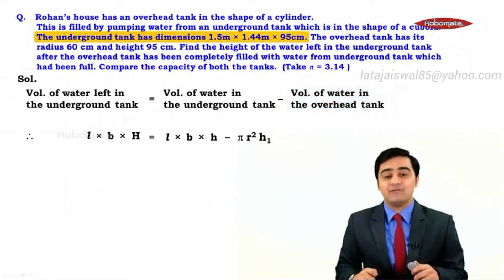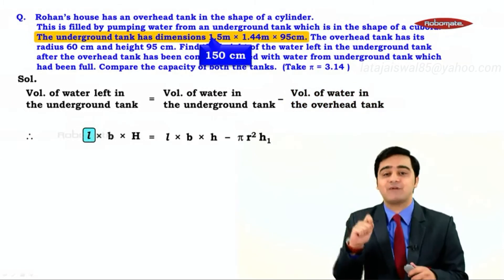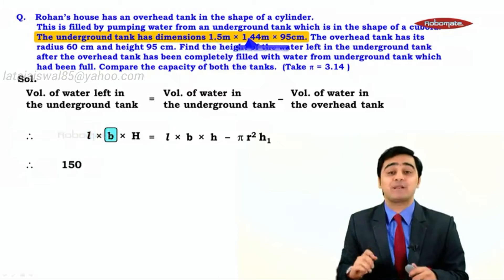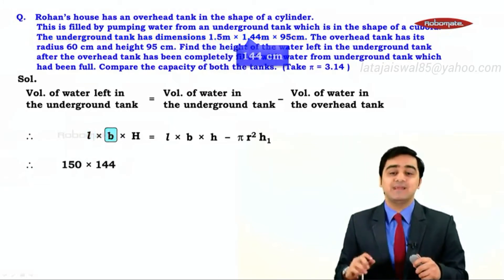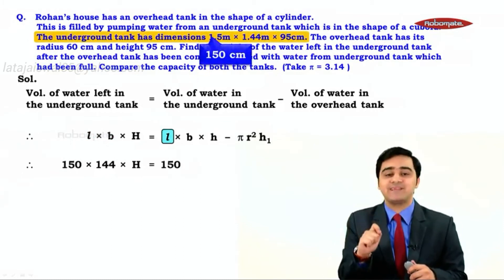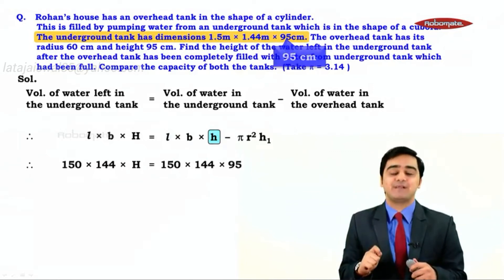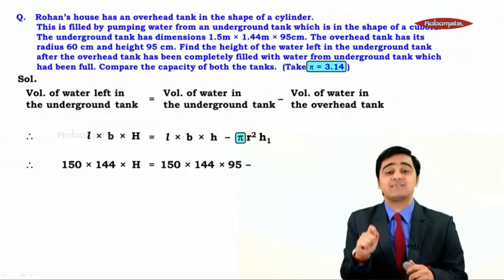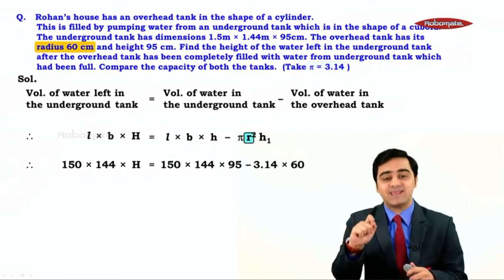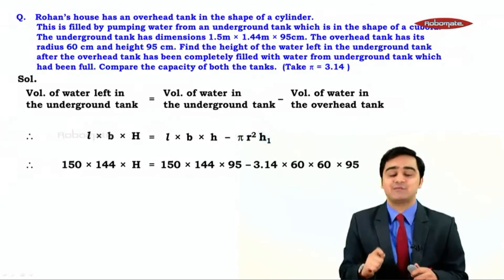Now let us substitute the values. The length of the cuboid is 1.5 meters, which we take as 150 centimeters. The breadth is 1.44 meters, which is 144 centimeters. The height is what we need to find. The full underground tank has length 150 cm, breadth 144 cm, and height 95 cm. For the cylinder, π is 3.14, the radius is 60 cm, so we write 60 × 60, and the height is 95 cm.